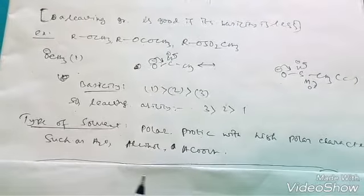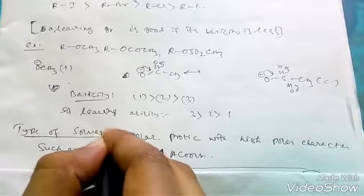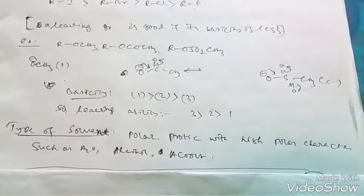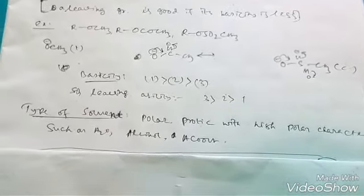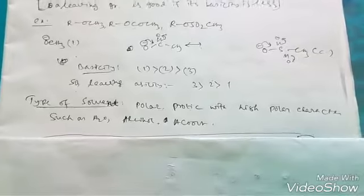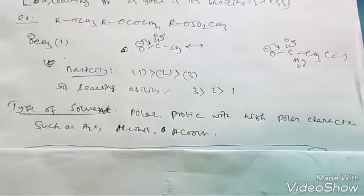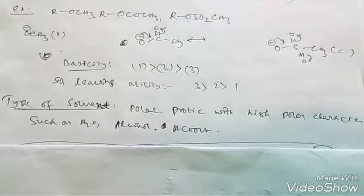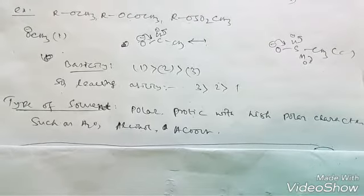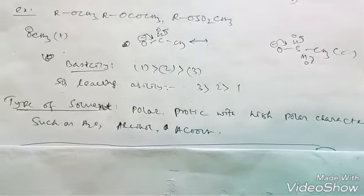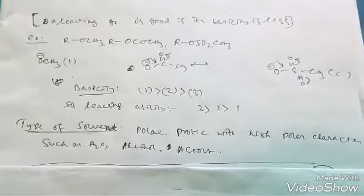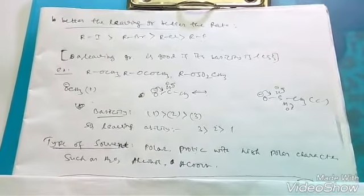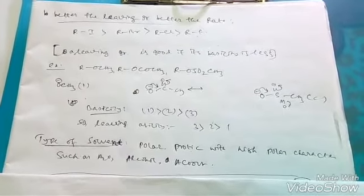Now I will talk about the solvent. Which kind of solvent can we use for SN1 reaction? Mainly polar protic solvents with high polar character are used for SN1 reaction. Some examples we can give: H2O, alcohol, and acetic acid or formic acid. So remember, SN1 reaction is carried forward in a highly polar character solvent. Without it, it can't be possible because SN1 reaction undergoes with a carbocation formation, so it is very important to have a polar character of solvent.